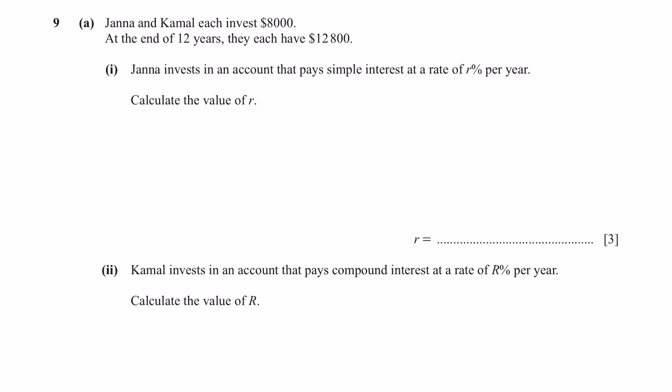Question 9a. Janna and Kamal each invest $8,000. At the end of 12 years, they each have $12,800. Part 1. Janna invests in an account that pays simple interest at the rate of R% per year. Calculate the value of R. They have already mentioned here that this is simple interest. So the first step we can do here is write down the formula.